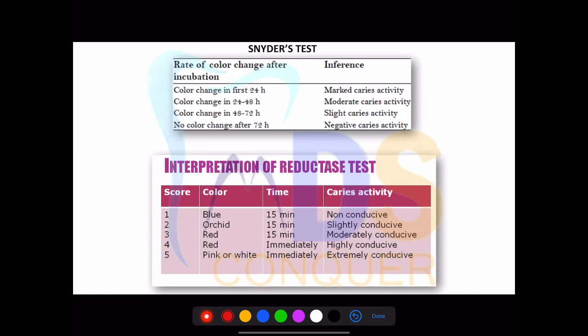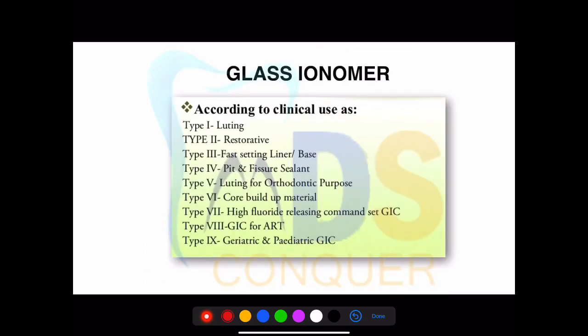Caries risk assessment tests are very important — please go back to your PP books where the entire notes on caries activity tests are clearly given. The most important test is the Snyder test — please note the changes. Another important test is the salivary reductase test. These two are most commonly repeated, often asking about time and caries activity.